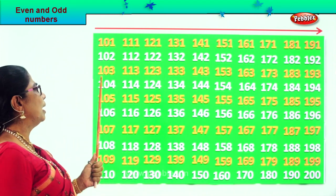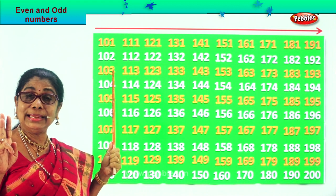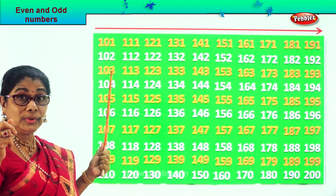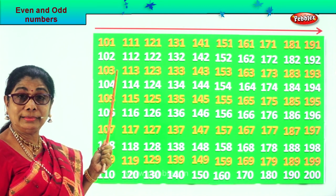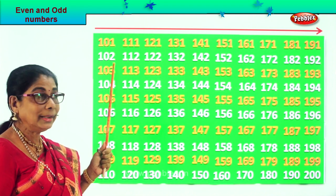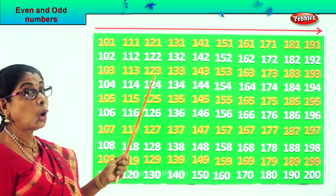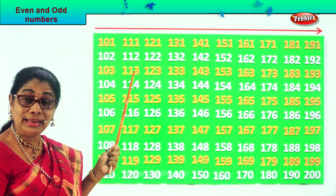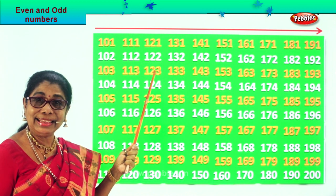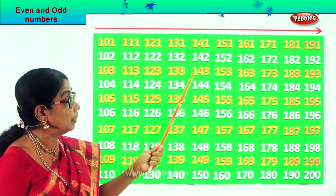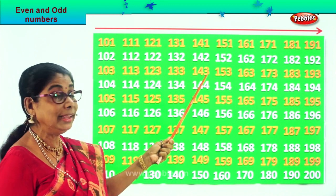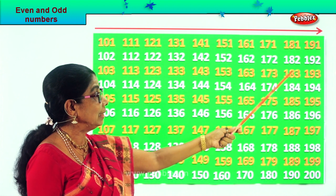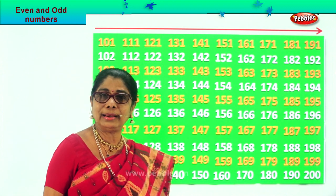Now let's look at the second set of odd numbers — all numbers ending in 3: 3, 13, 23, 43. Here we are starting with 100: 103, all numbers ending in 3 — 103, 113, 123, 133, 143, 153, 163, 173, 183, 193. All odd numbers ending in 3.